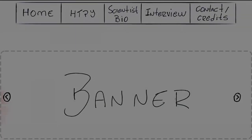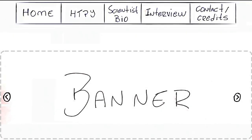Let's start by talking about the site Snapbar, which has the items Home, HTPY (How to Protect Yourself), Scientist Bio, Interview, and Credits and Contacts. As the site was designed in the one-page style, when clicking on each of these elements, you are directed to the corresponding section on the page itself.